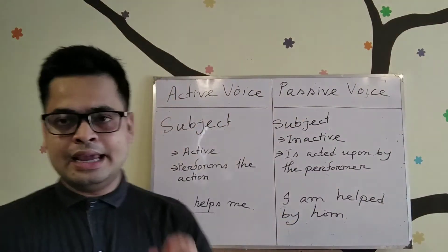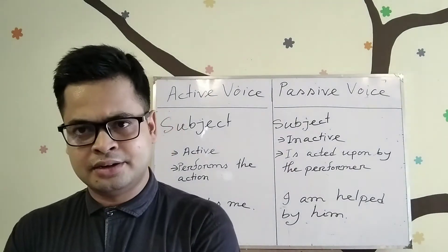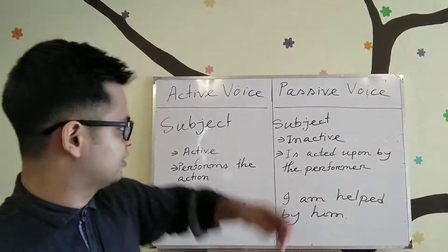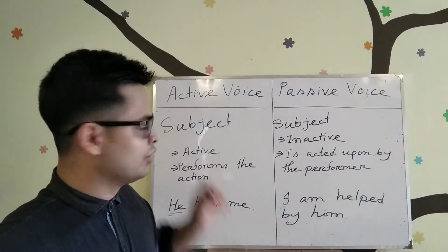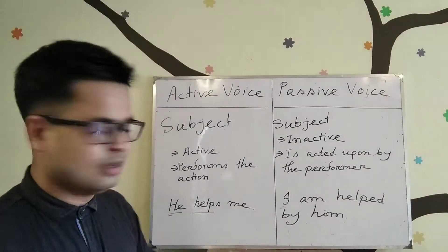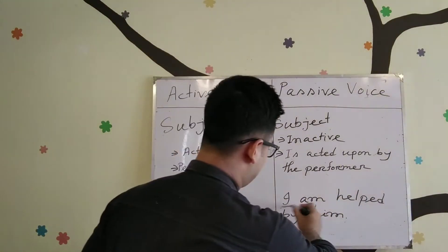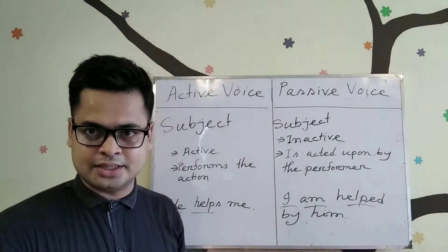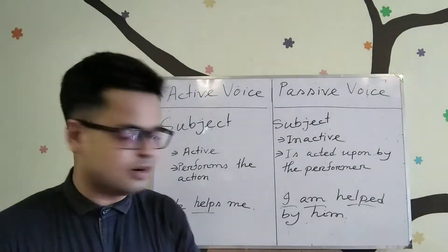In a passive voice, the object of an action is made into a subject, so the subject is inactive — it is acted upon by the performer. For example: 'I am helped.' Here, 'I' is the subject which is acted upon by the performer 'he'.